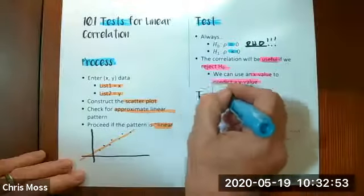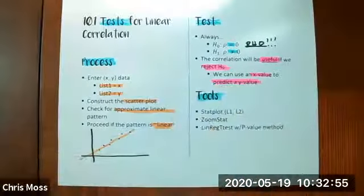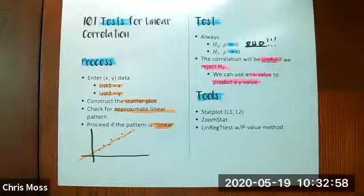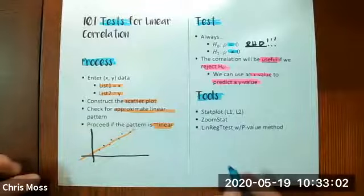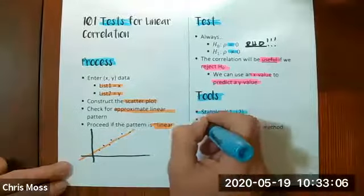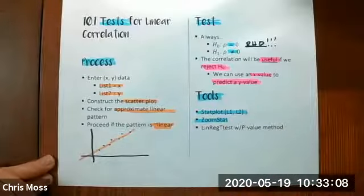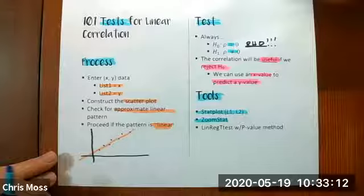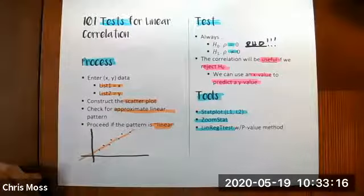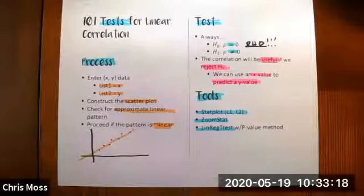What about tools? What kind of tools do we need here? We need a couple of different tools, which is what makes this a complicated process. The graph, we need the stat plot command with the scatter plot option. I will use the zoom stat command to get the picture we'll want. And then we'll use linear regression t test. It's one of the built in capabilities on your calculator to conduct our tests.